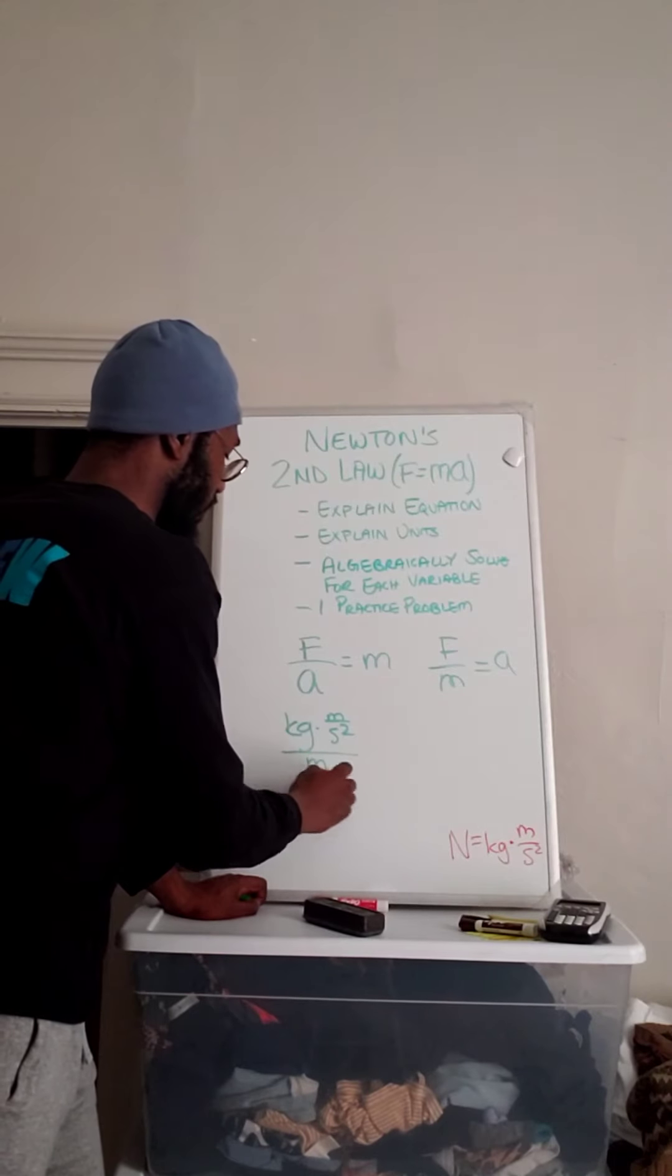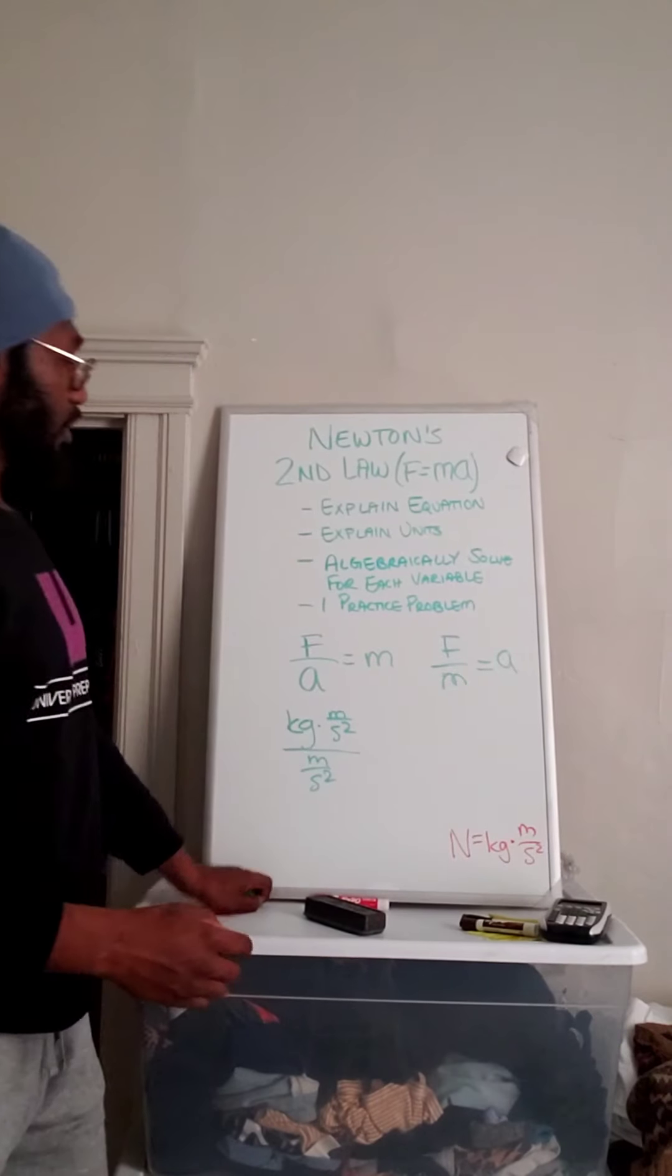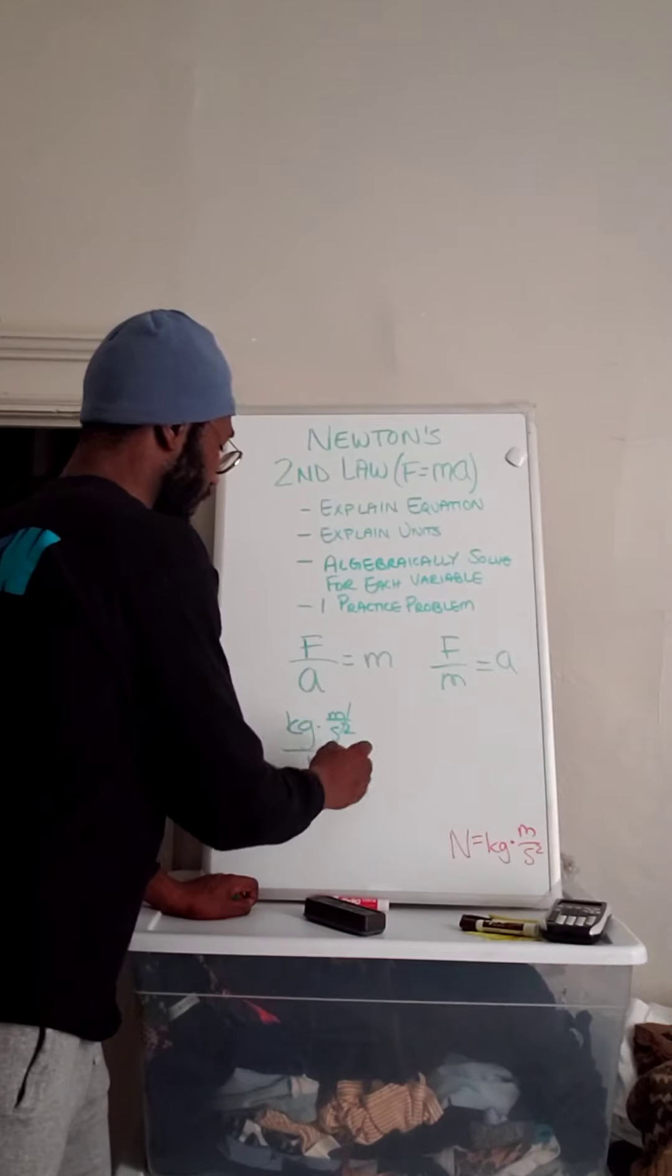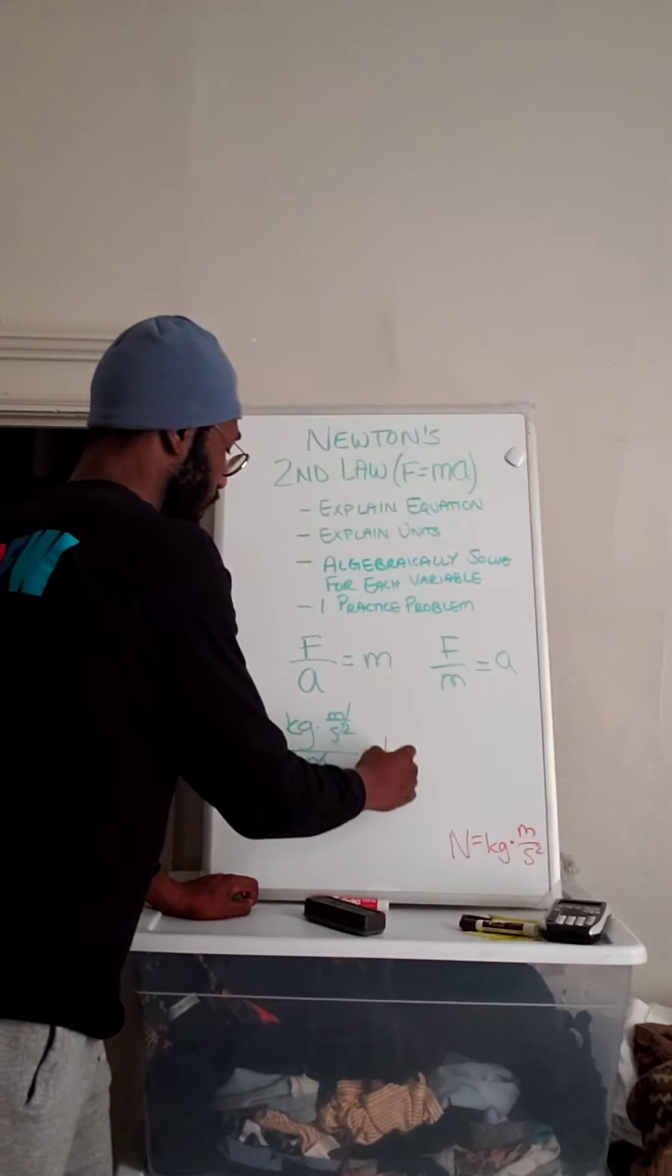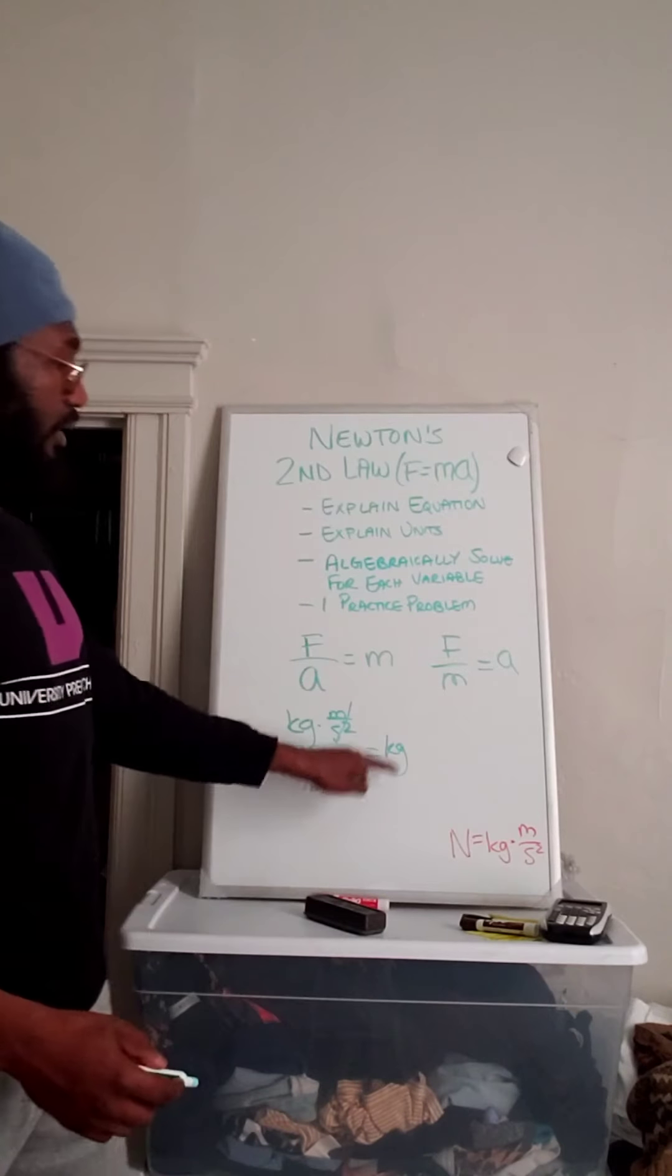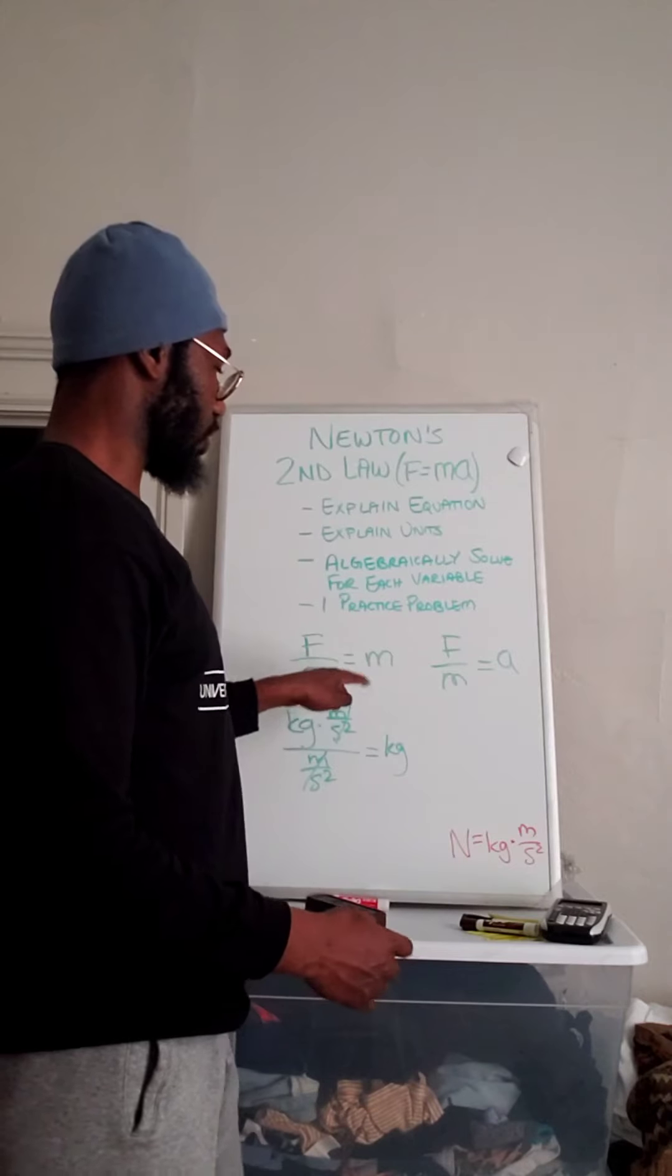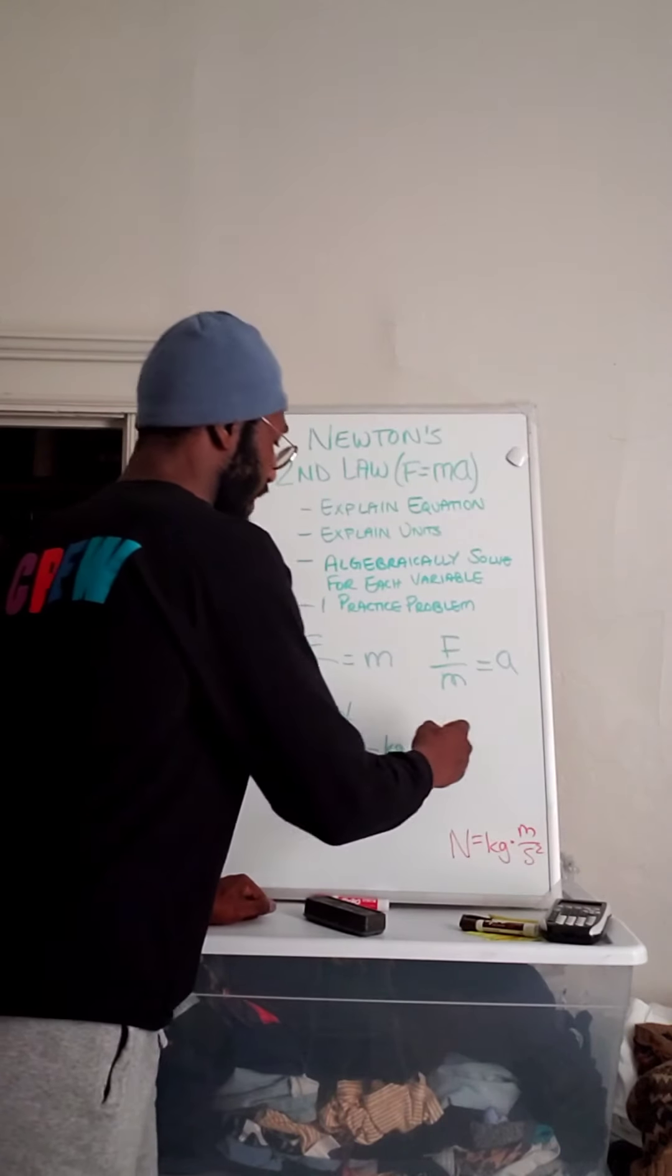In acceleration, we already know is meter per second squared. So once we cancel out the numerator and the denominator, we're left with kilograms. And kilograms is indeed the unit of mass. So that's how the unit analysis works out for solving for mass.